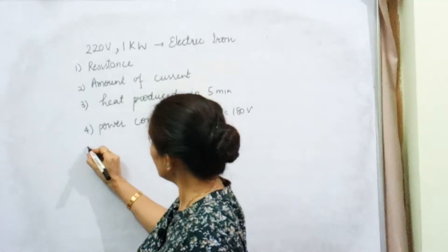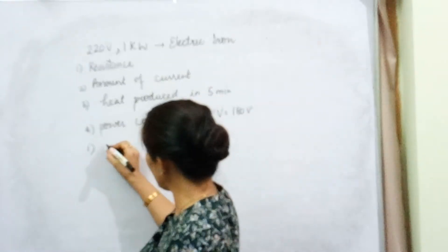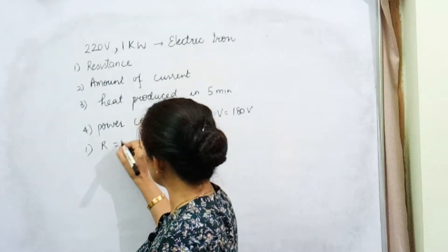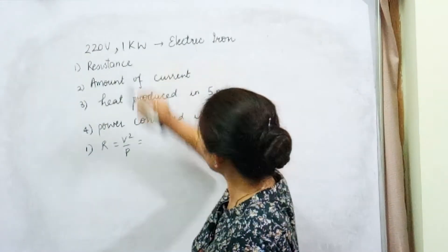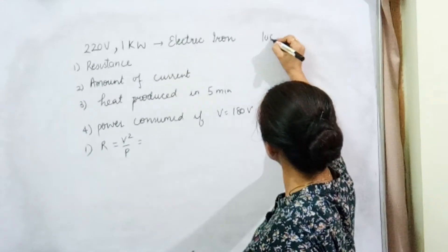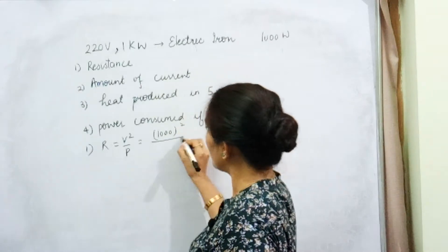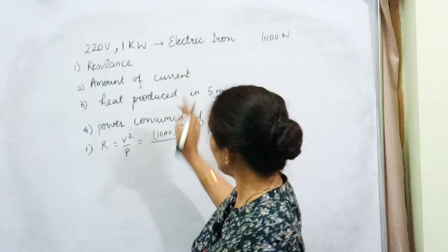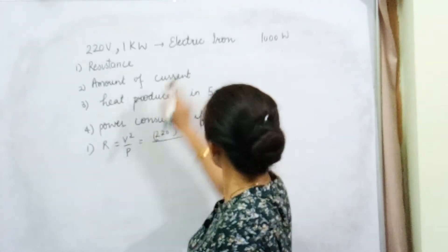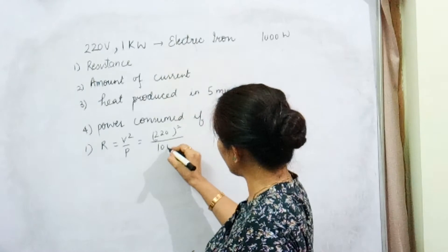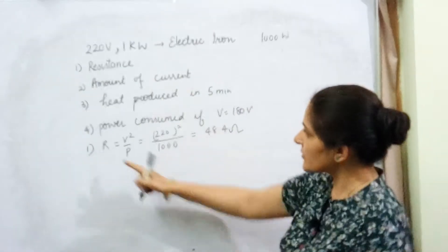I believe we can very easily do that. First, we will start with the resistance. With the help of the power rating, resistance is given by R = V²/P. The potential difference is 220 and the power is 1 kilowatt, which is written as 1000 watt. So R = 220² / 1000.